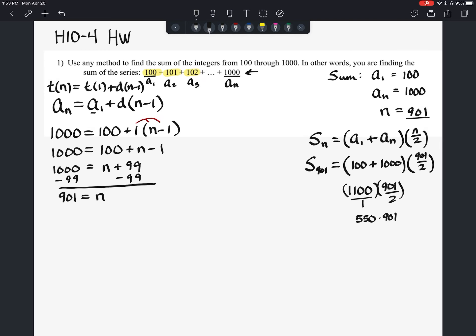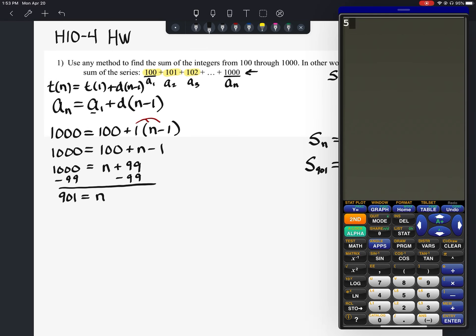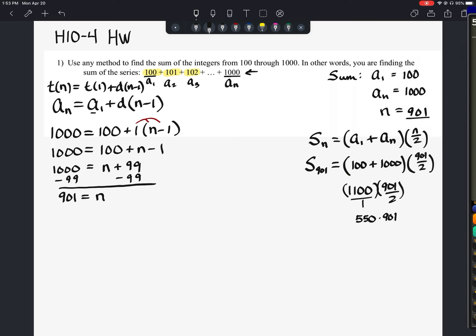I'm going to use a calculator for that part. Let's see here. We've got 550 times 901. Our answer, 495,550. 495,550 is the sum of that series. And that is our answer.